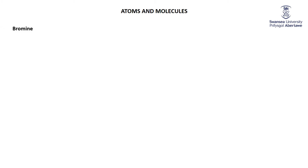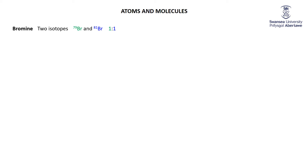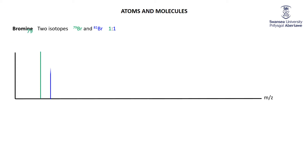Let's think about bromine. Bromine is a halogen. Bromine has two stable isotopes: one has a mass of 79, the other a mass of 81. These are in approximately a one-to-one ratio. So when we do a mass spec of bromine, we will see, as you would expect, a peak at 79 and a peak at 81.